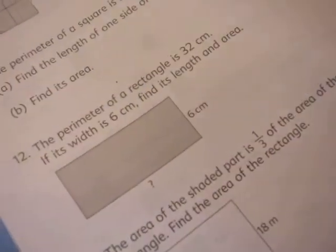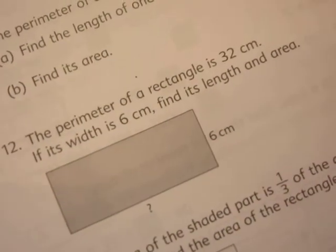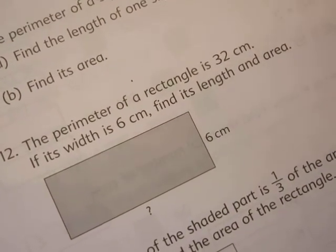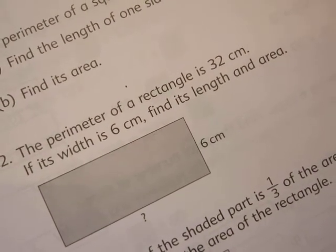Okay, we have another problem. The perimeter of a rectangle is 32. If its width is 6, find its length and area.